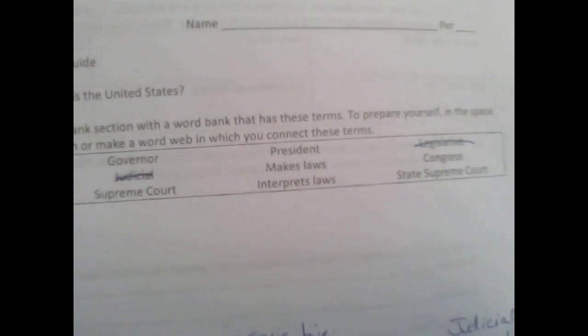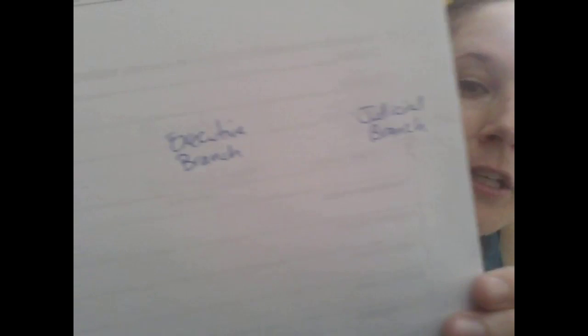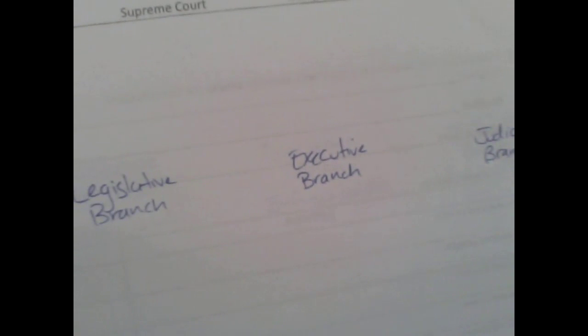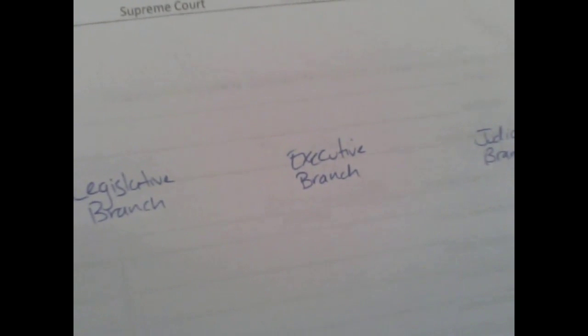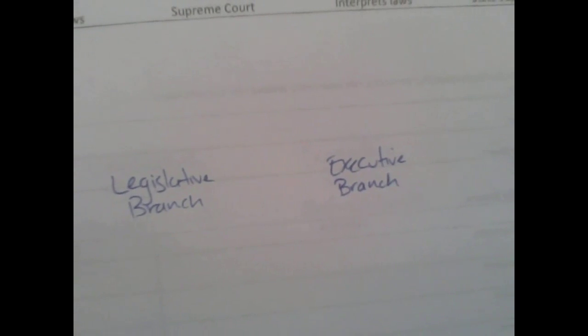Right off the bat, you should see the three branches — the legislative, executive, and judicial branches. It doesn't say 'branch,' but you have the three words there. So what I did was write legislative, executive, and judicial branch, and then cross those words off.